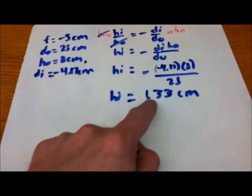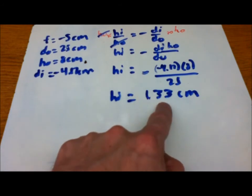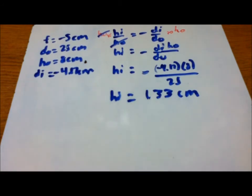Well, you look right here, hi is 1.33, and it's a positive 1.33, so that indicates that we have an upright image.